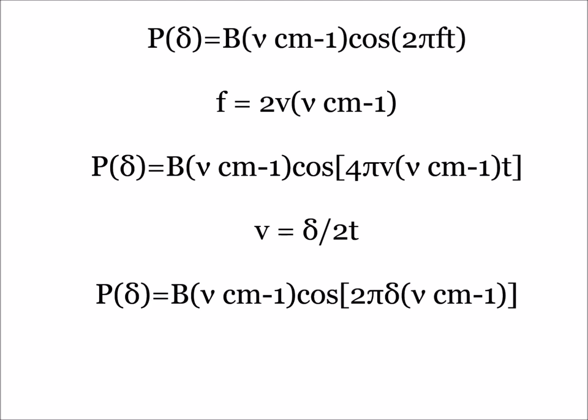The cosine function of the interferogram can be expressed as p of delta equals b of nu times cosine of 2 pi f t, where b of nu is a constant that accounts for the intensity of the light source. Substituting the frequency variable for its equation, the resulting equation becomes p of delta equals b of nu times cosine of 4 pi times velocity times nu times t.